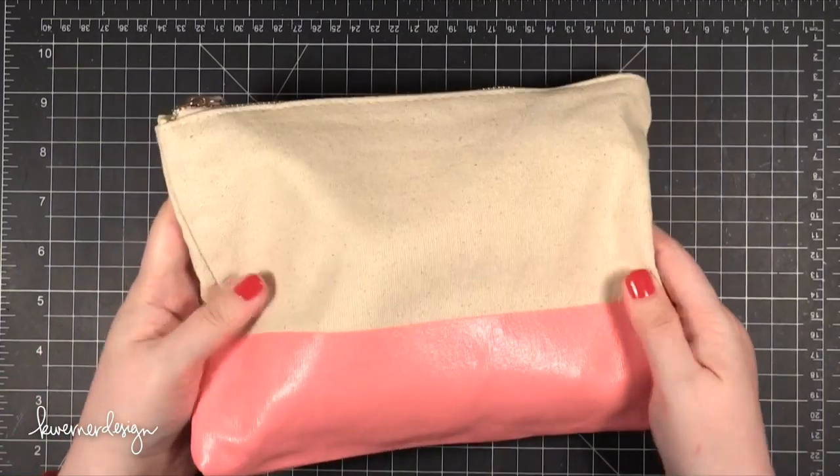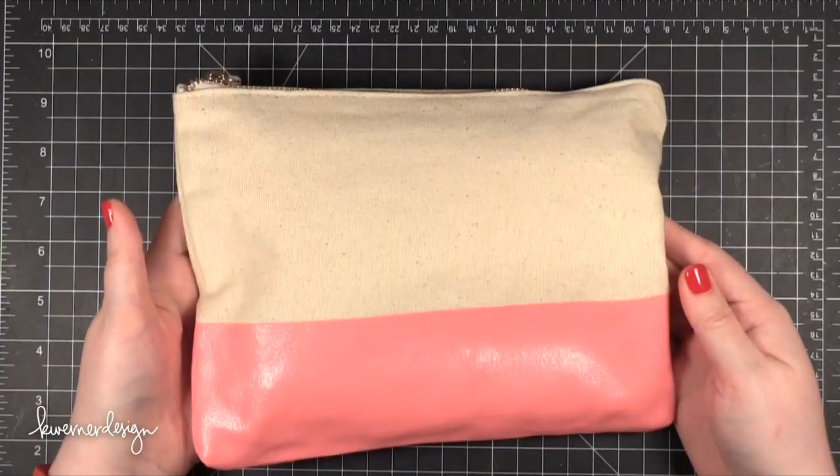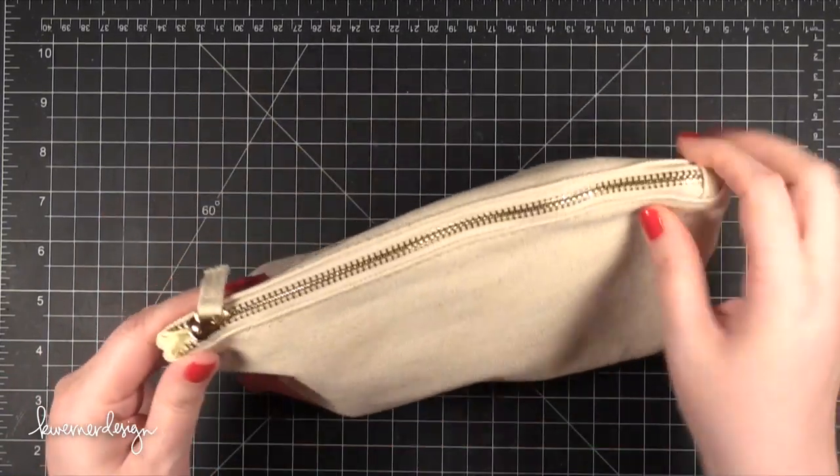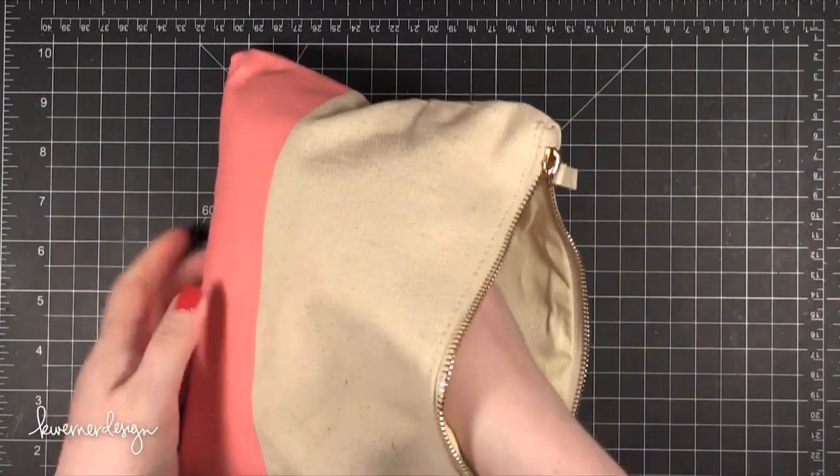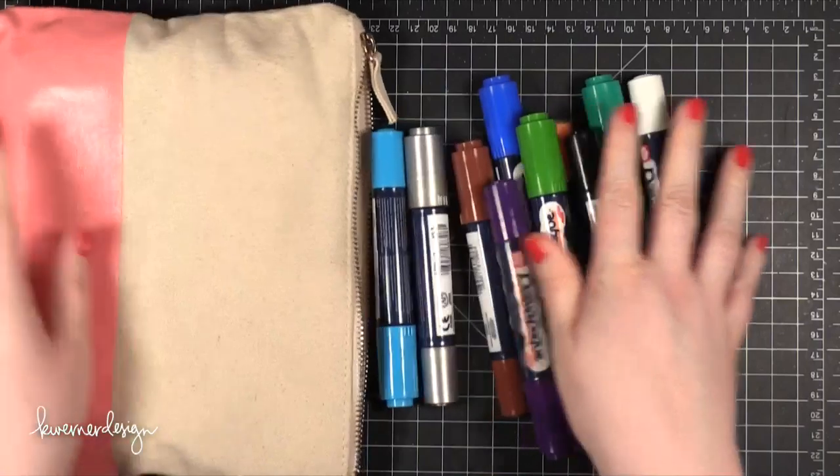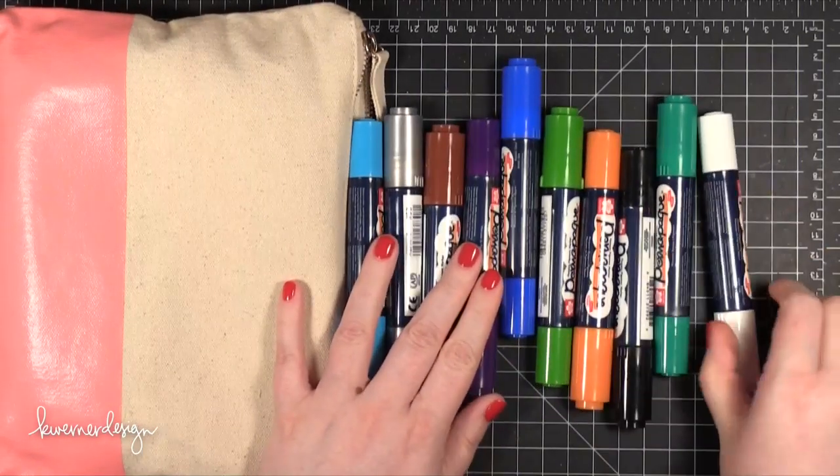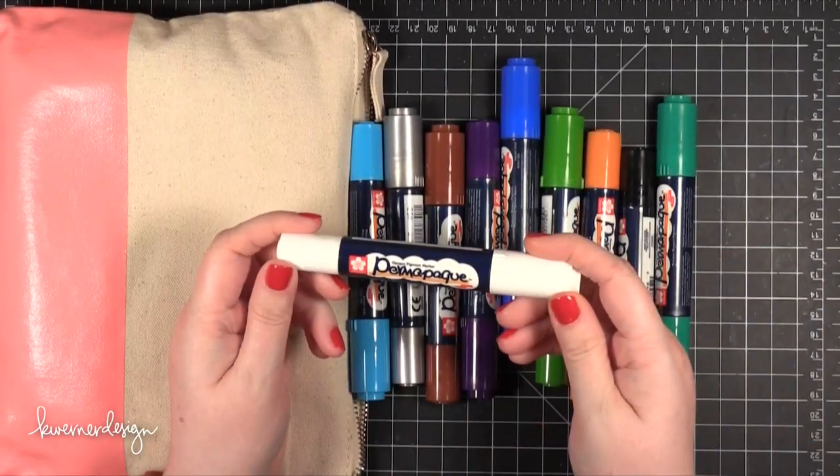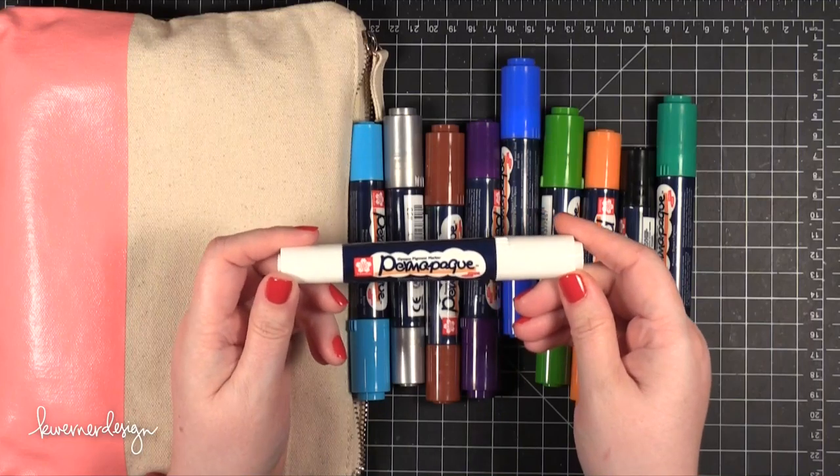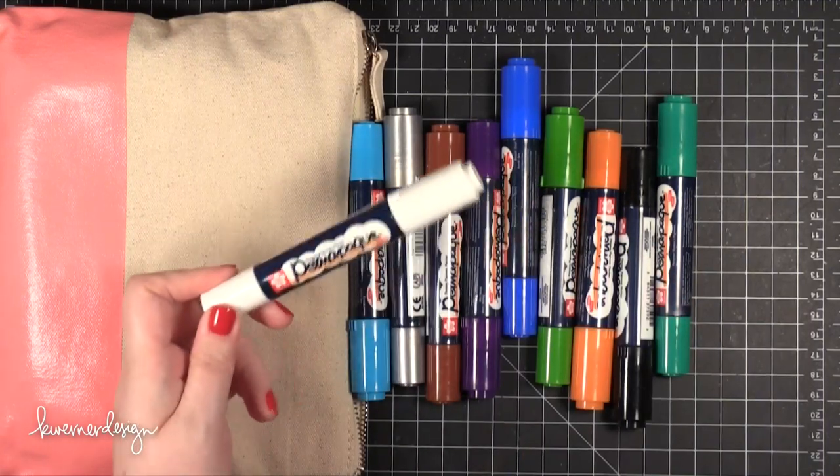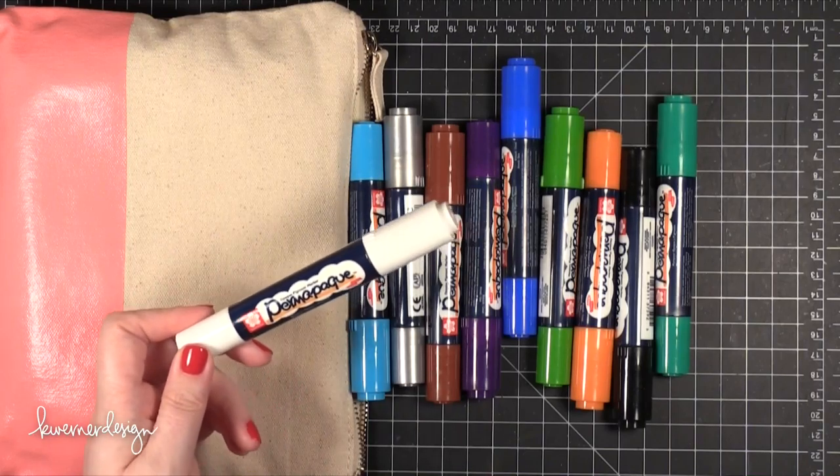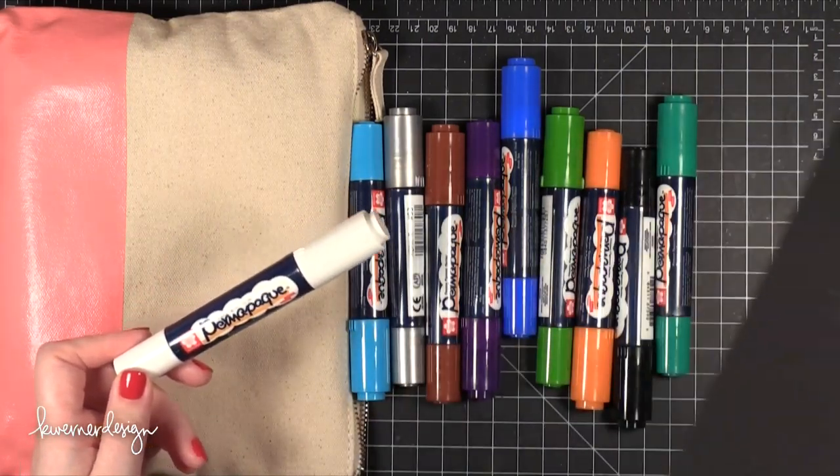I also got this big pouch at Paper Source. And after I bought it I realized I probably could have made this. Because you guys know that I've made some little pouches like this in the past. But inside I've been storing all of these markers that I've been obsessed with recently. And I ended up buying a bunch of them. These are the opaque pigment markers. They're called Permapake. These are from Sakura.